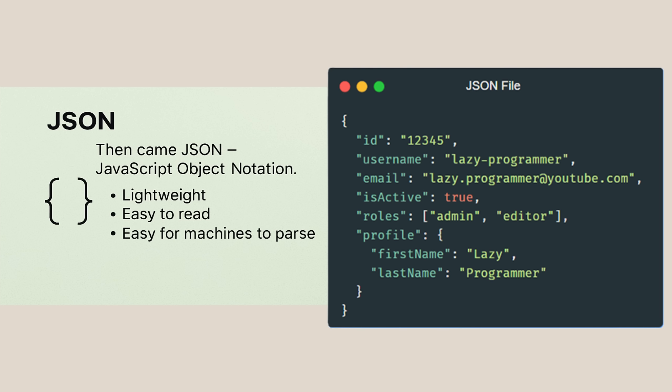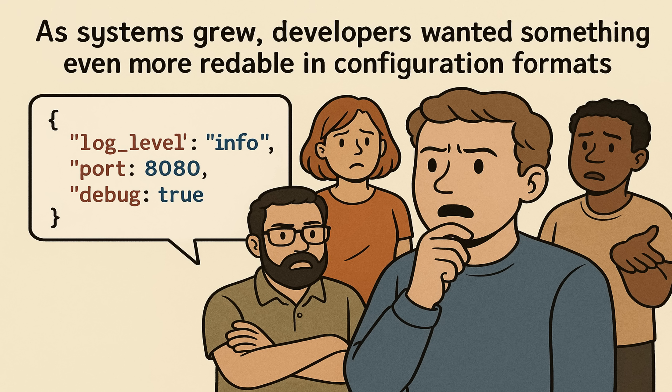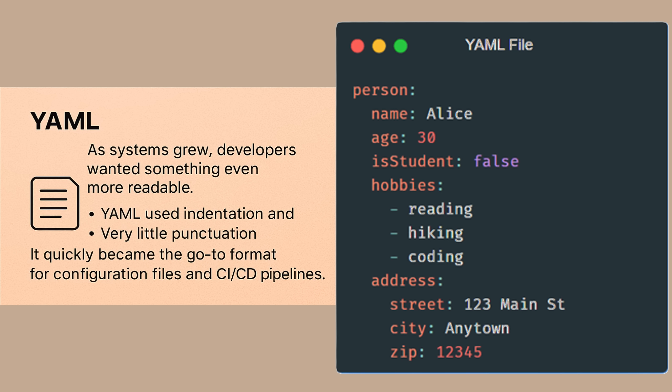Then came JSON — JavaScript Object Notation. It is lightweight, easy to read by people, and easy to understand by machines as well. JSON hit a perfect balance: it had structure but not too much, it was simple but still powerful. Very quickly, JSON became the standard for APIs and data exchange — basically the universal language of web data. But as systems grew, developers wanted something even more readable. That's when YAML arrived. YAML used indentation and very little punctuation, and it felt almost like natural writing. It quickly became the go-to format for configuration files and CI/CD pipelines. But YAML had its own issues — great for humans but not always great for machines. One wrong space and everything broke. Indentation errors and weird parsing quirks became common pain points for developers.